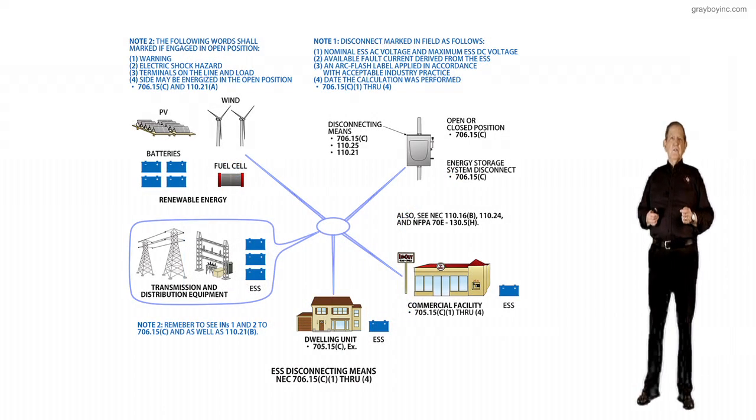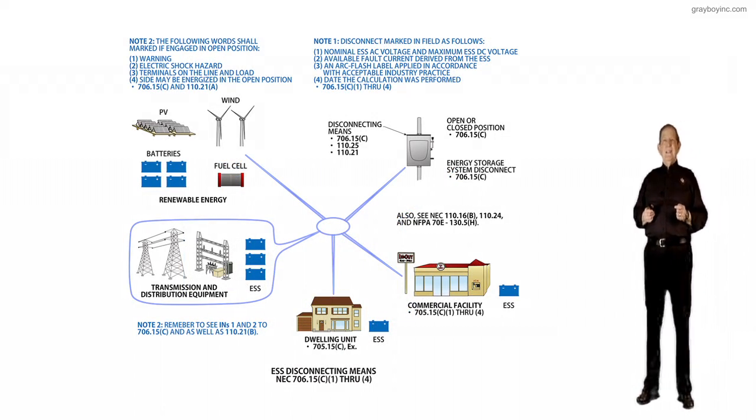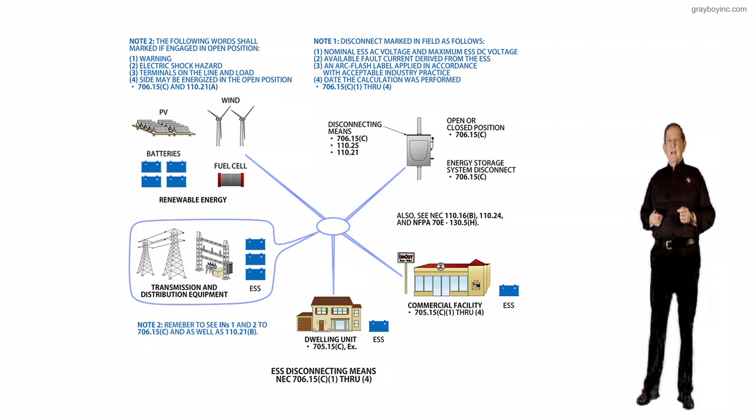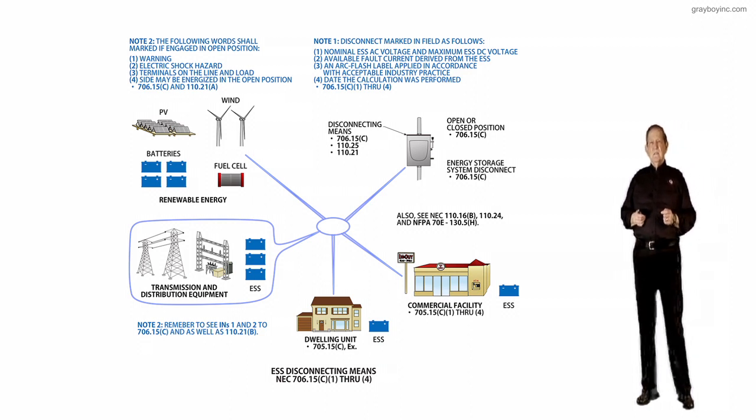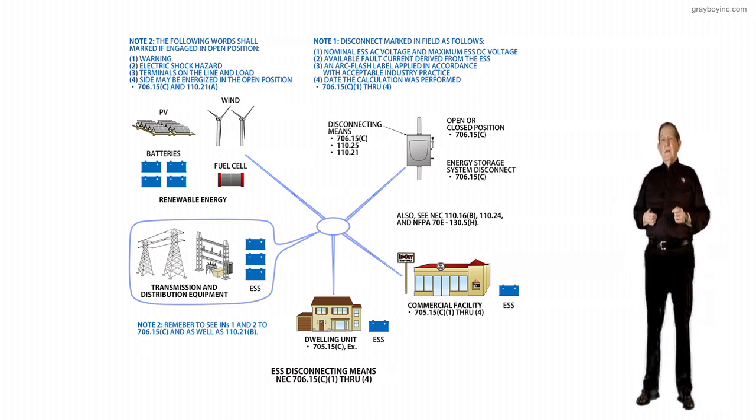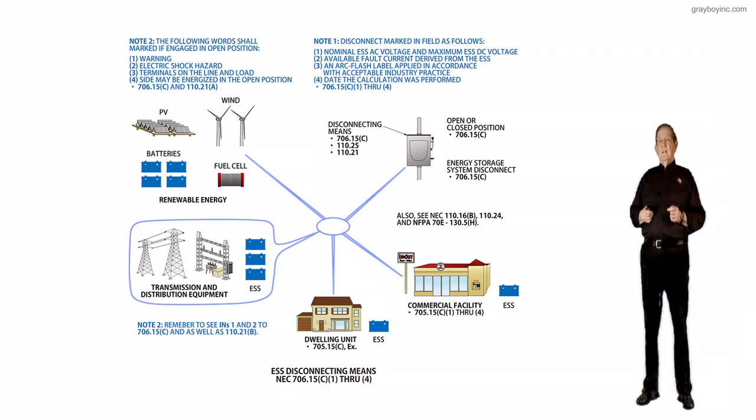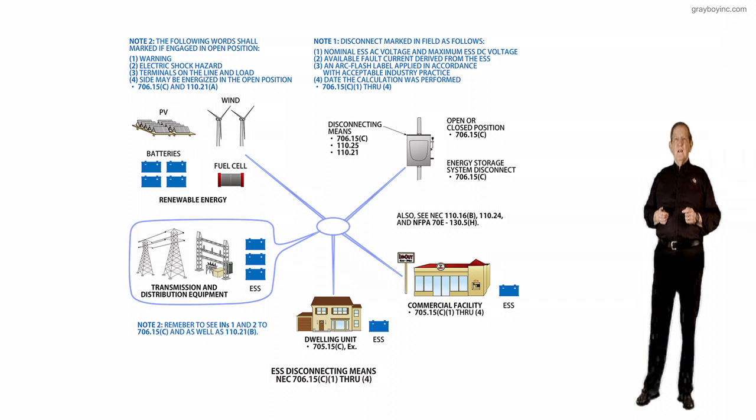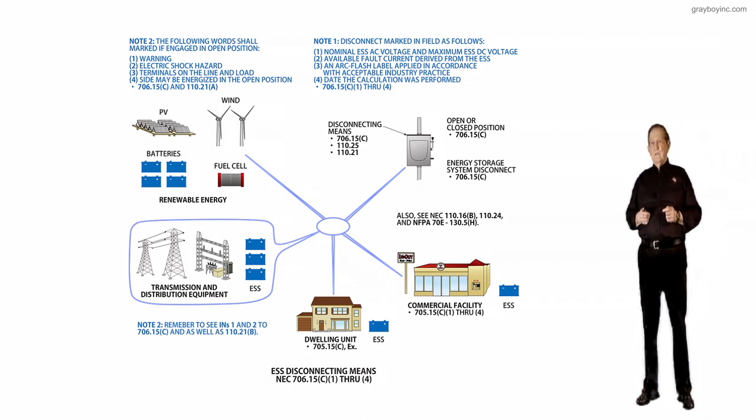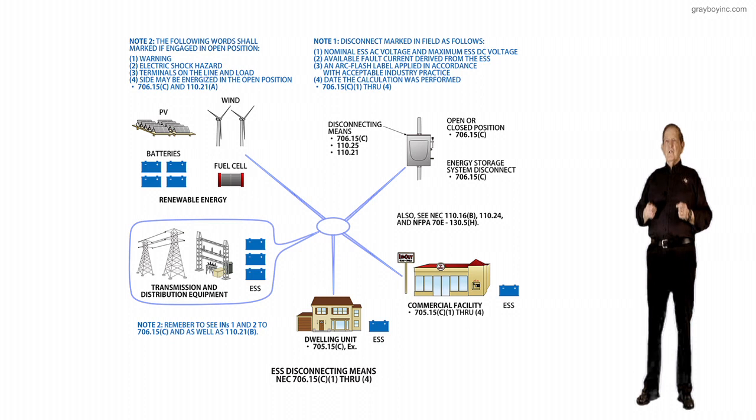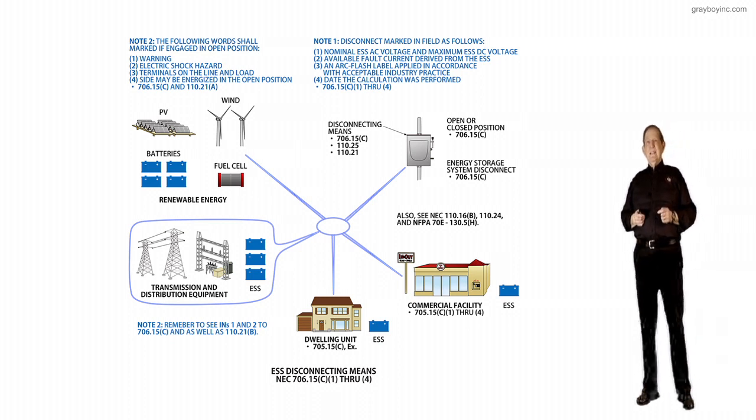This illustration deals with the ESS disconnecting means in accordance with 706.15A1 through A3. The purpose of this change: a revision was accepted and has been added to make it very clear that a disconnect shall be provided for all ungrounded conductors derived from an energy storage system, ESS.